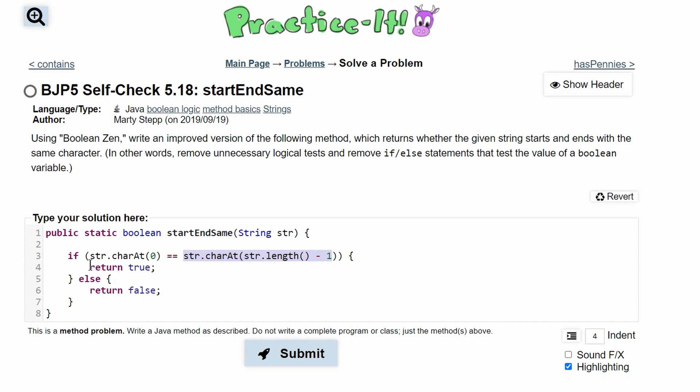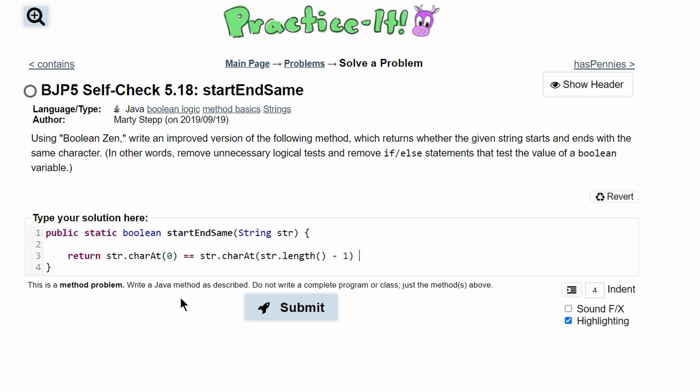If this is true, if the first character and the last character are the same, it will return true. And if it is not the same, it will return false. This is a statement that tests truth or false because of this equal sign.